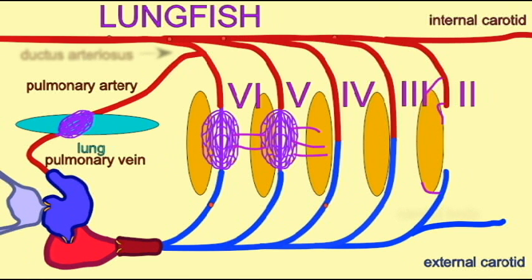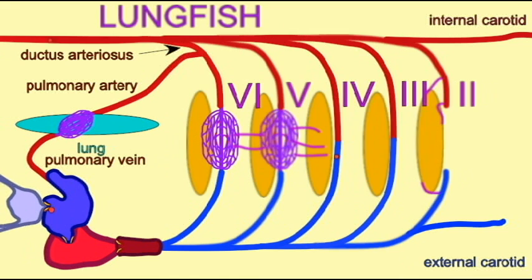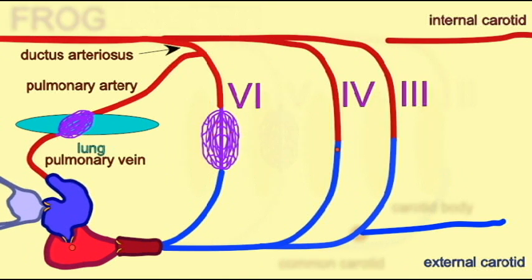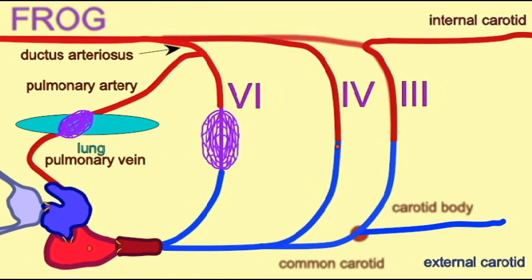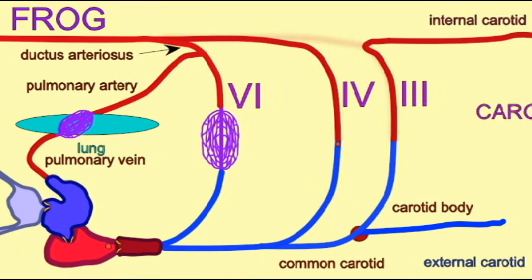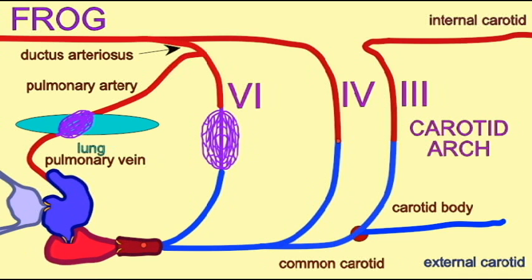Mammal embryos develop the same basic ancestral aortic arch pattern, but once again, this ancestral pattern is modified. Aortic arches 1, 2, and 5 are completely lost. The remaining ones are modified. Obviously, there are no gills.